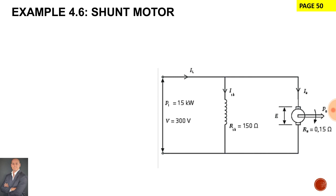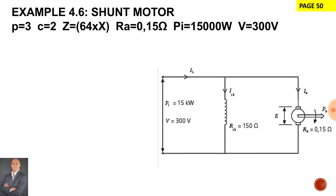Now in example 4.6 on page 50 we are dealing with a DC shunt motor. It is a six pole machine therefore it has three pole pairs. It is wave wound therefore c is equal to two. It has 64 slots on the armature assembly. It has an armature resistance of 0.15 ohms. A power input of 15,000 watts. A terminal voltage of 300 volts and the armature is rotating at 1200 revs per minute. The flux per pole is 0.016 weber.